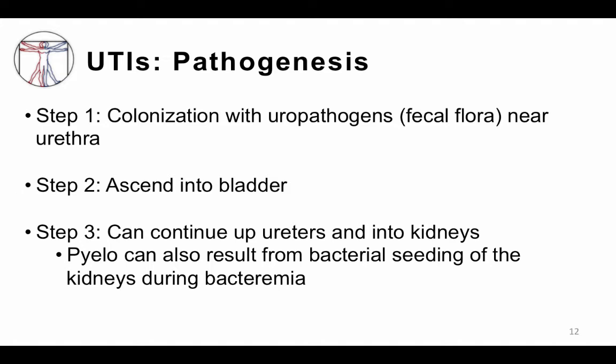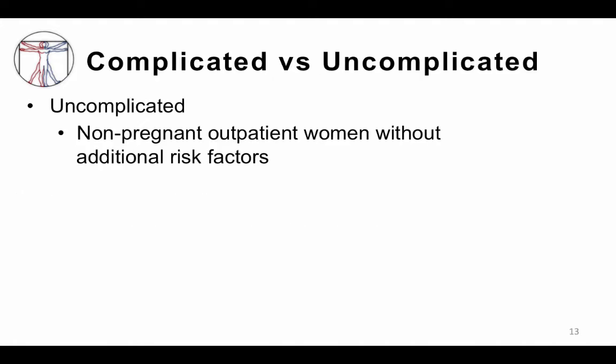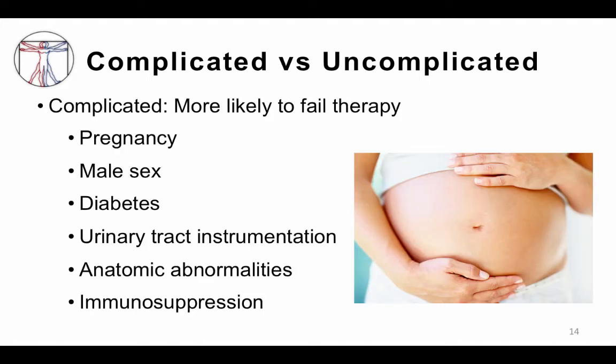Note that we don't typically think of Staph aureus as a uropathogen in the sense that it ascends from below. Another framework for UTIs is whether they're complicated or uncomplicated. Uncomplicated means the patient is a non-pregnant outpatient woman without additional risk factors, such as anatomic abnormalities or urinary tract instrumentation. Complicated UTIs mean the patient is more likely to fail therapy, and by definition include any pregnant woman, any man with a UTI, patients with diabetes, patients whose urinary tracts have undergone instrumentation such as a urologic procedure or transplant, anatomic abnormalities, and immunosuppression.